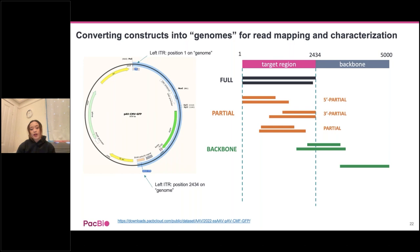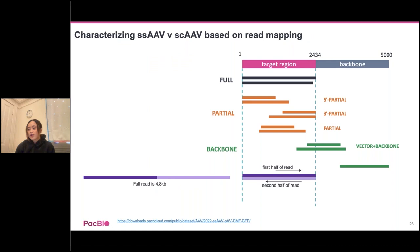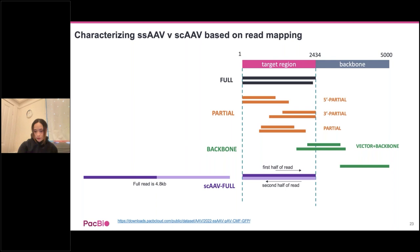Reads extending beyond the target region into the backbone are categorized as 'backbone.' For self-complementary AAV, a full read of approximately 4.8 kilobases would have the first half mapping to the target region and the second half mapping back in self-reverse complement to the target region — characterized as self-complementary AAV full. The same partial and backbone logic applies for self-complementary AAV.